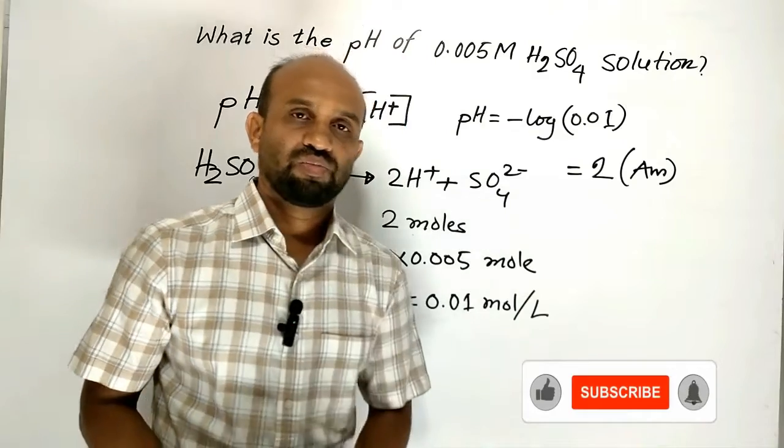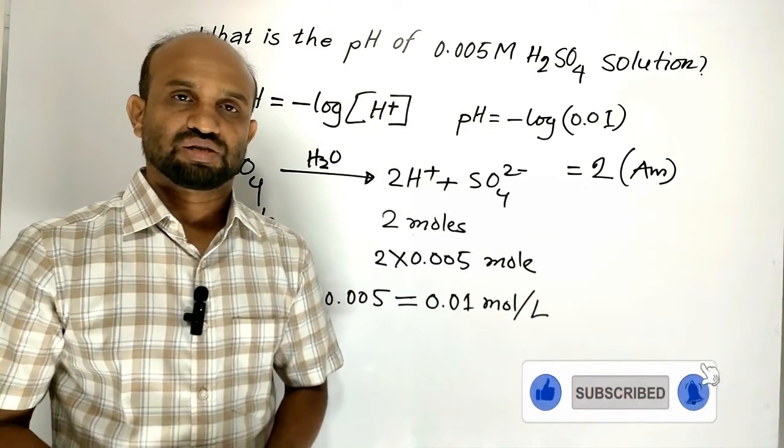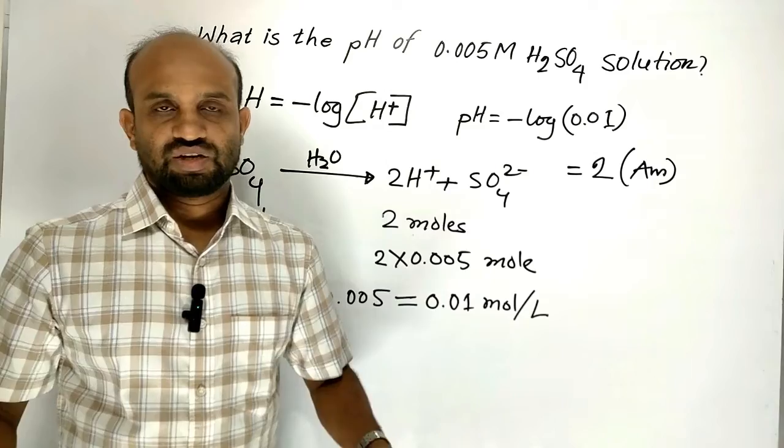The pH of 0.005 molar sulfuric acid solution is 2. Thank you very much.